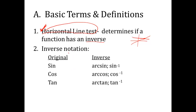Notation-wise, when we find the inverse of a function: for sine, the inverse could be called arc sine or sine with a negative one exponent. Cosine is called arc cosine or cosine negative one. Tangent is arc tangent or tangent to the negative one power. Either notation means the same thing as inverse — you will see it written both ways.